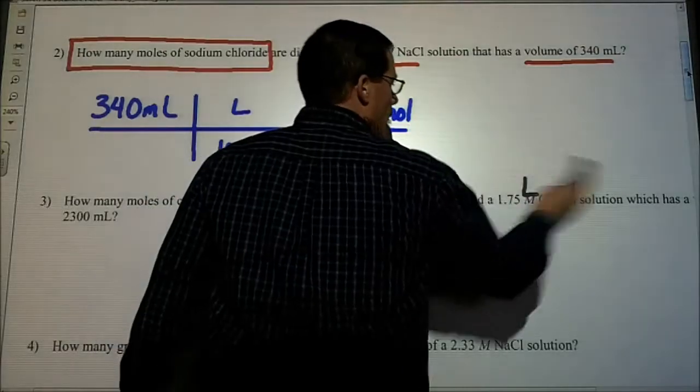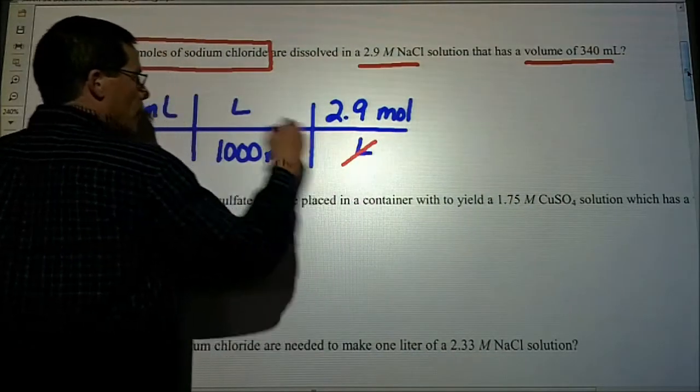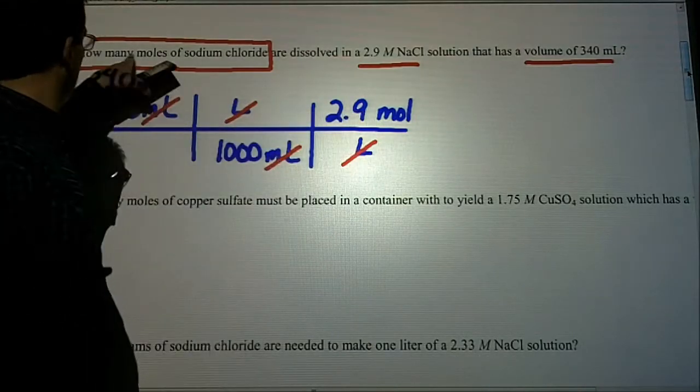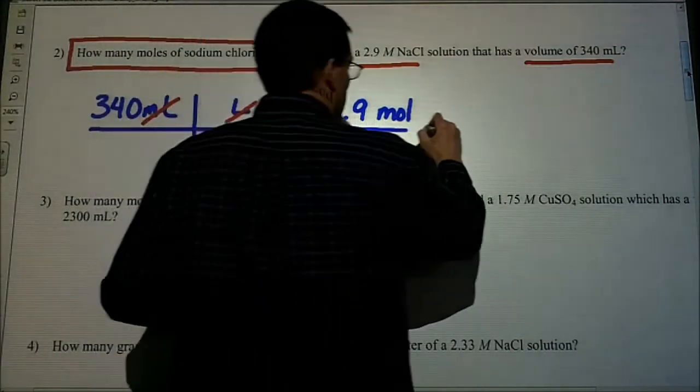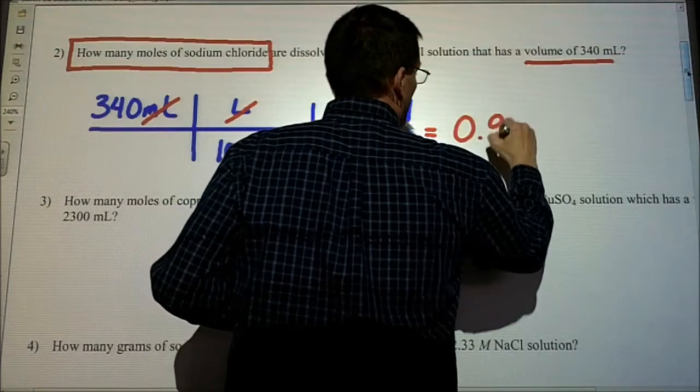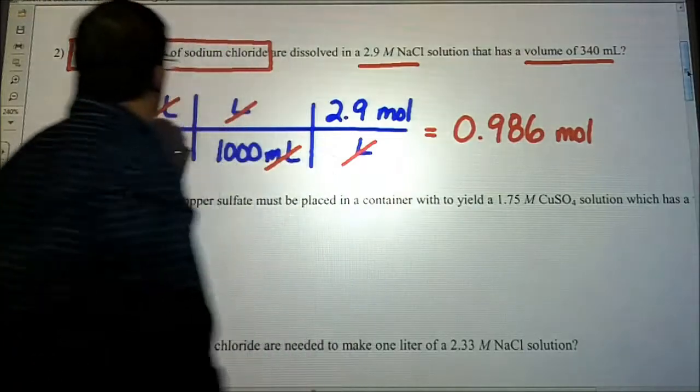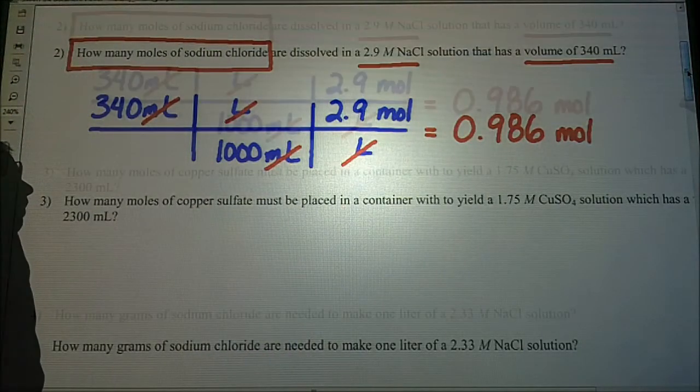We're going to let our units cancel out so that we get what we're looking for. The liters cancel out, the milliliters cancel out. Now we can type all this in and I have 0.986 moles of sodium chloride that are dissolved in 2.9 molar solution of sodium chloride.